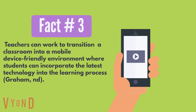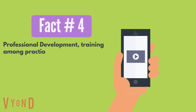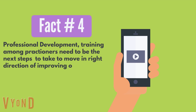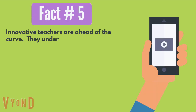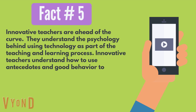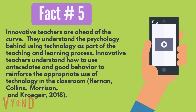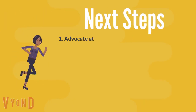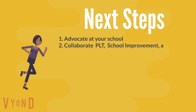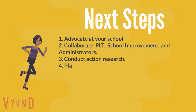Professional development training among practitioners needs to be the next step to move in the right direction of improving our educational system. Innovative teachers are ahead of the curve — they understand the psychology behind using technology as part of the teaching and learning process, and how to use anecdotes to reinforce the appropriate use of technology. The next steps an educator can take are: number one, advocate at your school; number two, collaborate with your PLT and administrators; number three, conduct action research; number four, facilitate professional development; number five, reflect to make necessary changes.